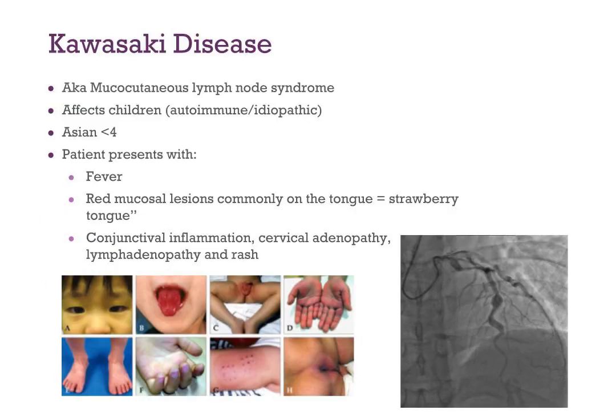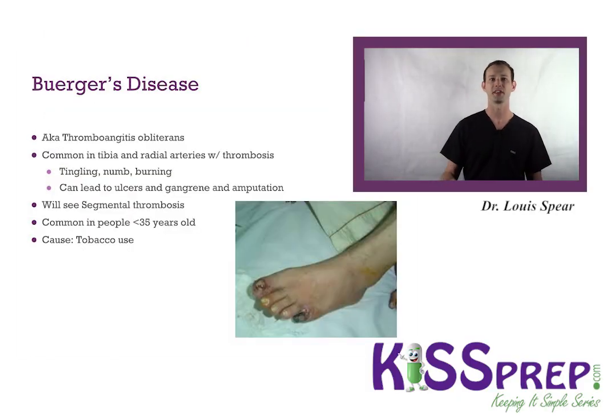Kawasaki Disease, also known as mucocutaneous lymph node syndrome, affects young children around four or five years old or less, tends to be Asian, and is idiopathic autoimmune in nature. It can affect the whole body: red mucosal lesions in the mouth, strawberry tongue, red rash on the trunk, conjunctival inflammation, and cervical or abdominal lymphadenopathy. Key: if you see a child around four or five with a fever lasting at least five or six days, think Kawasaki until proven otherwise.